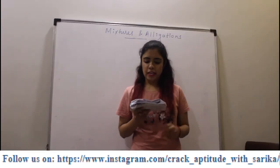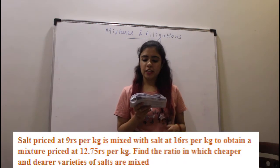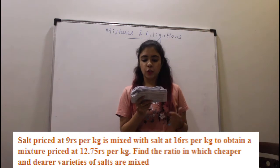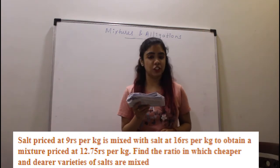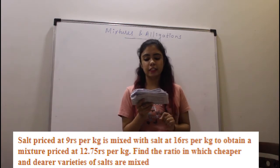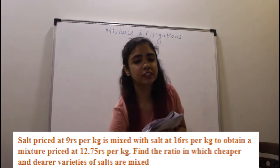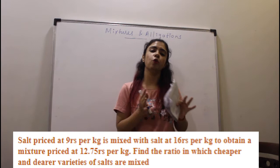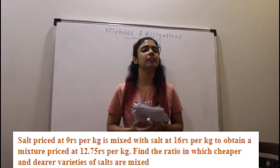The first question says: salt priced at 9 rupees per kg is mixed with salt priced at 16 rupees per kg to obtain a mixture priced at 12.75 rupees per kg. Find the ratio in which the cheaper and the dearer varieties of salts are mixed. If you have not seen the video of the basic concepts, first go and refer to that video and then come back so that we can discuss the questions.